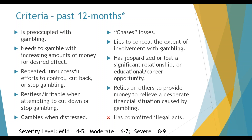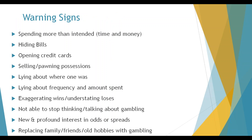A tenth criterion — committing illegal acts — was in the previous DSM-4 but has been removed. It didn't more accurately diagnose because generally when someone committed an illegal act, they'd already reached the threshold of a gambling disorder. Some important warning signs include selling or pawning possessions, lying about one's whereabouts, replacing family, friends, or old hobbies with gambling, and spending more money and time gambling than originally intended.